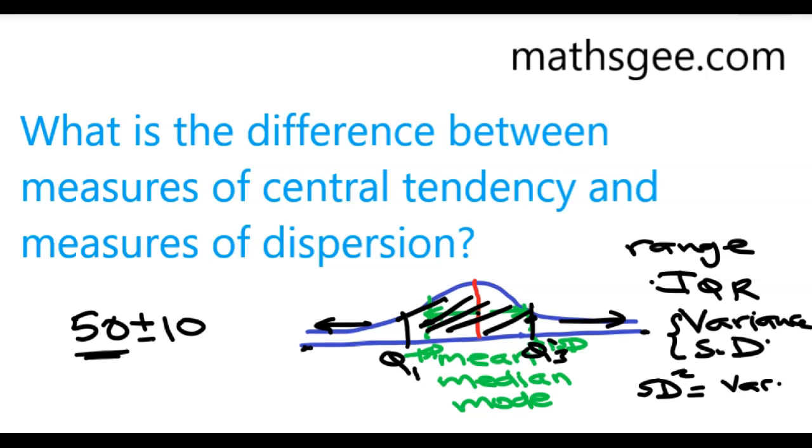In other words, we're saying the 50 would be here in the center and then you have one standard deviation, which is 40, one standard deviation, which is 60. So that is your middle 67% or so.